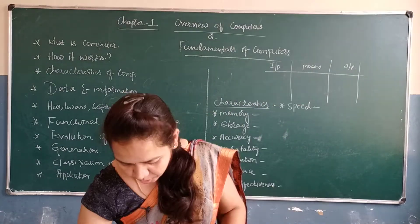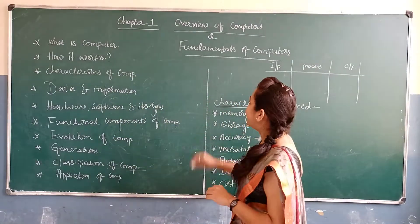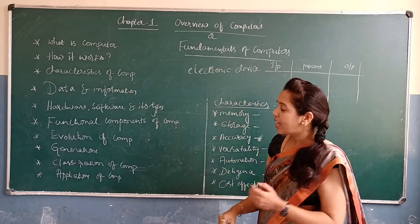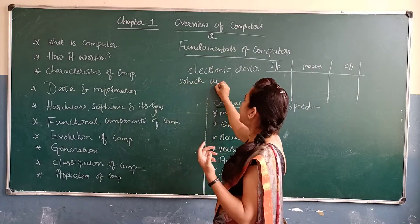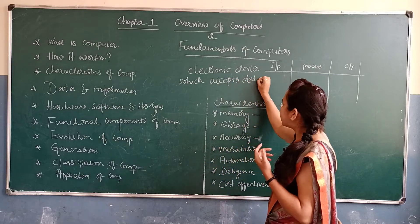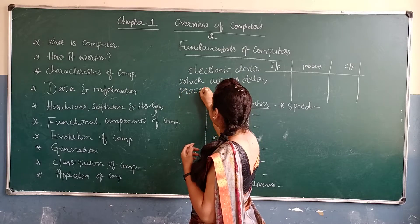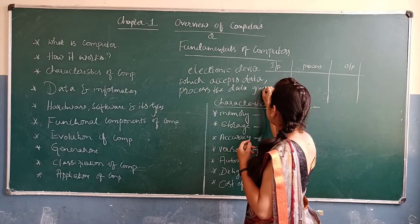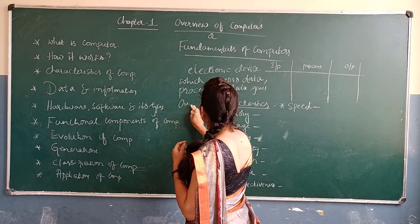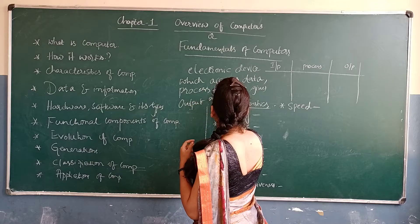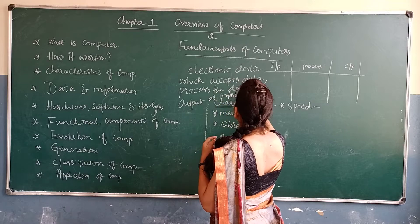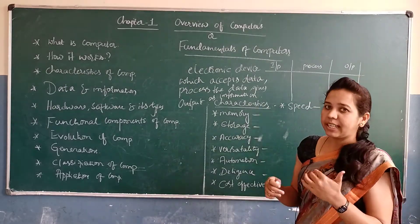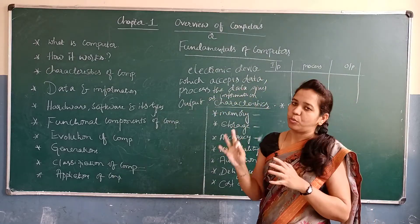Let us start with what is meant by a computer. A computer is an electronic device which accepts the data, then processes the data, then gives the output as an information.